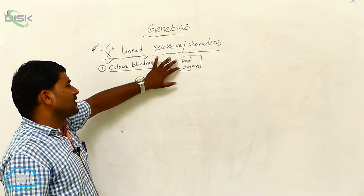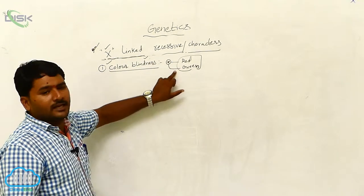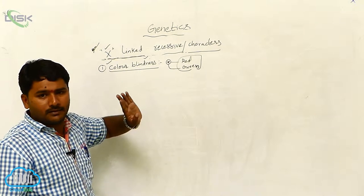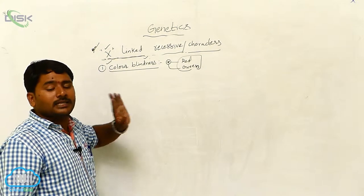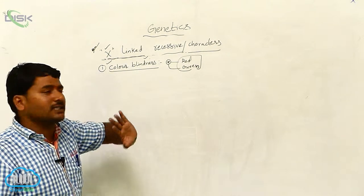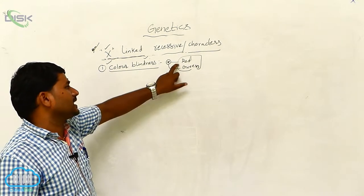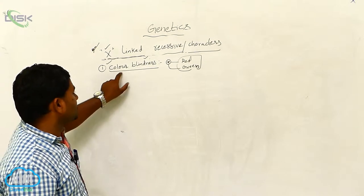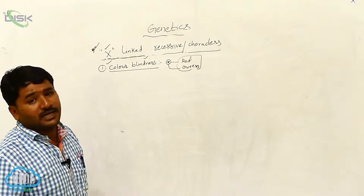The alleles which are responsible for the red and green, if they undergo mutation, that person will not identify the difference between red and green. This is called as color blindness.